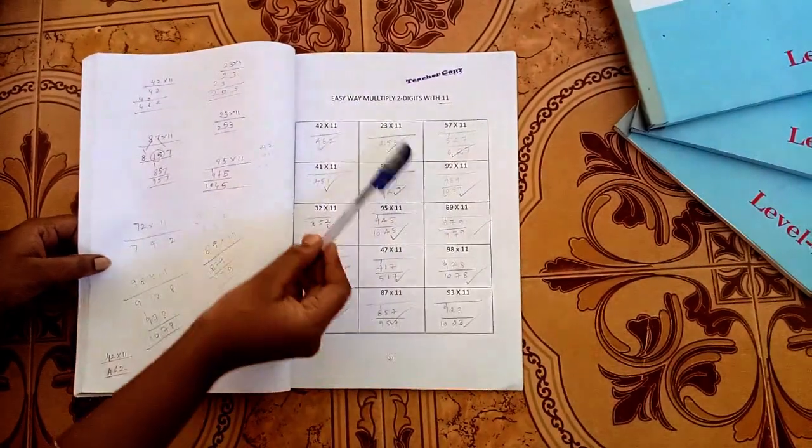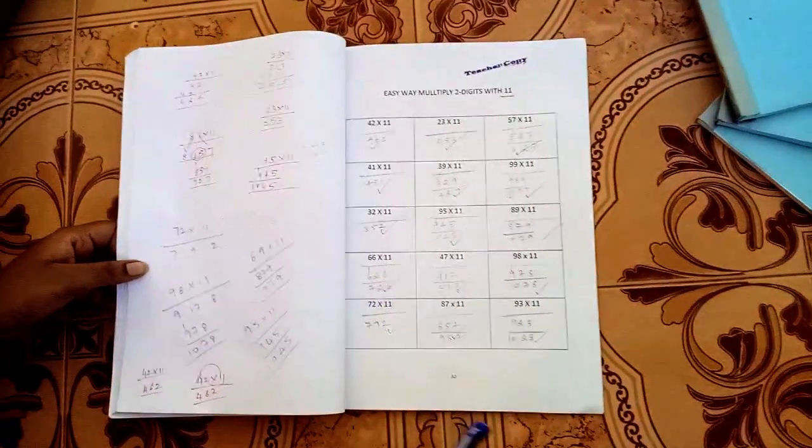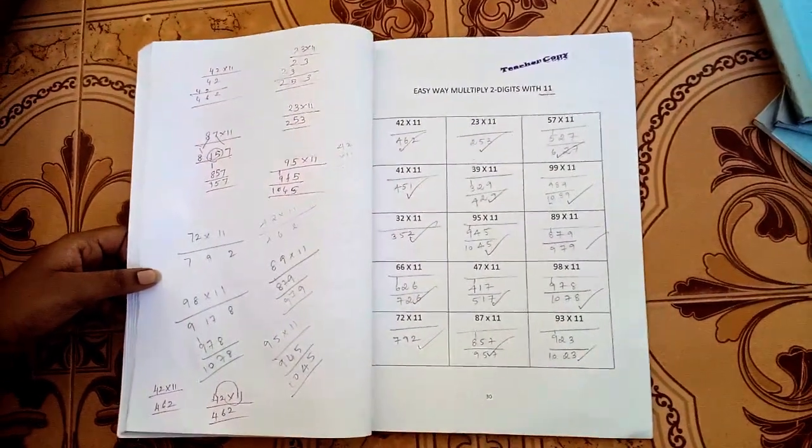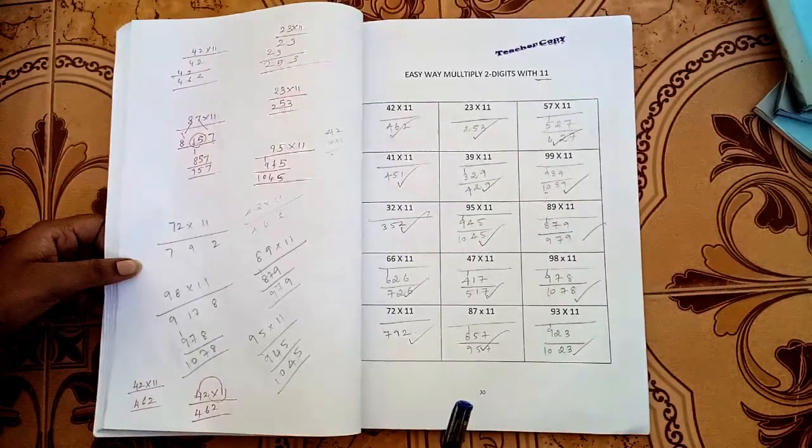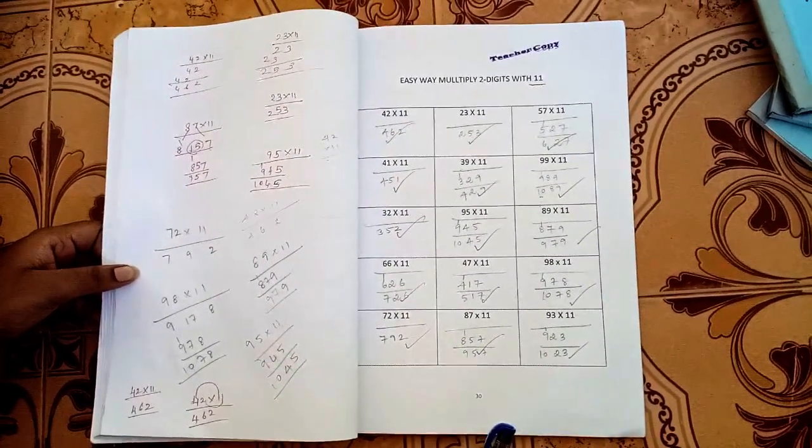We have 11 tables multiplication. You can see the videos on the YouTube channel. Easy way of multiplication is 2 digits with 11 tables. This is 3 digits with multiple numbers.